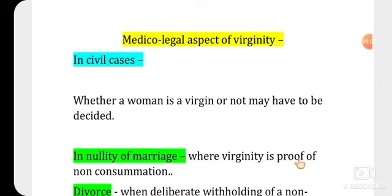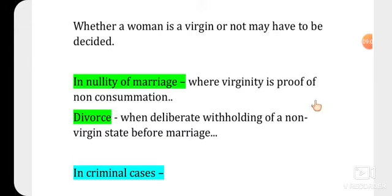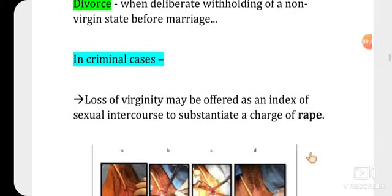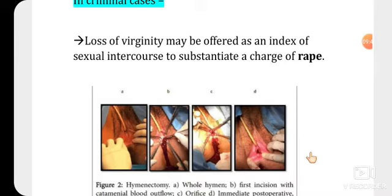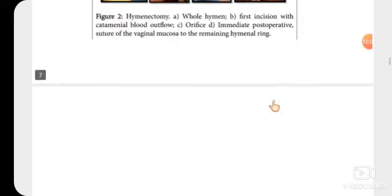Regarding the medical-legal importance and medical-legal aspects of virginity: in civil cases, nullity of marriage can occur based on whether virginity is proven or not — non-consummation of marriage. If the female is not proven to be a virgin before marriage, the male can cancel the marriage (nullity of marriage), or after marriage, the husband can cancel the marriage making it null and void, or divorce can occur. In criminal cases, loss of virginity may be defined as an index of sexual intercourse to substantiate a charge of rape — if the hymen is torn or ruptured, it can help prove sexual intercourse and rape.